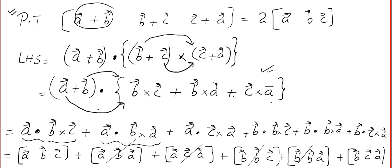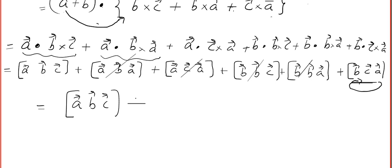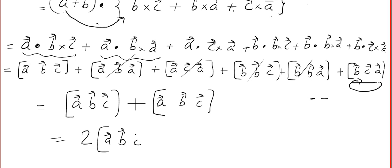Using determinant properties, this will be zero, this will be zero, this will be zero, and this will be zero — all terms with repeated vectors vanish. The remaining terms are [A,B,C] and one other. Performing a cyclic interchange on the last term — taking the last element to the front, equivalent to two interchanges, so sign stays positive — we get 2[A,B,C].